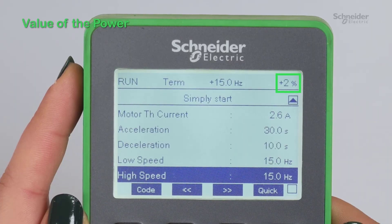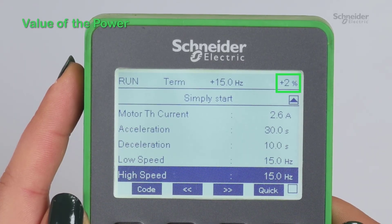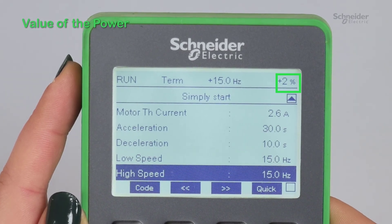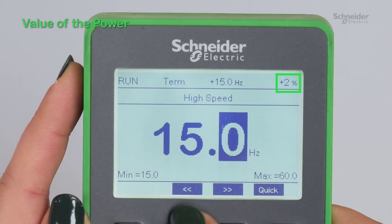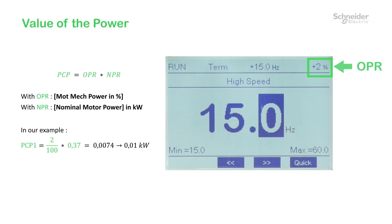For the first reference point, start the drive at 15 Hz. Take from the drive a percentage of the maximum power of the drive, OPR. Then calculate the Power PCP with this formula. Repeat the same operation at 24, 33, 41, and 50 Hz.